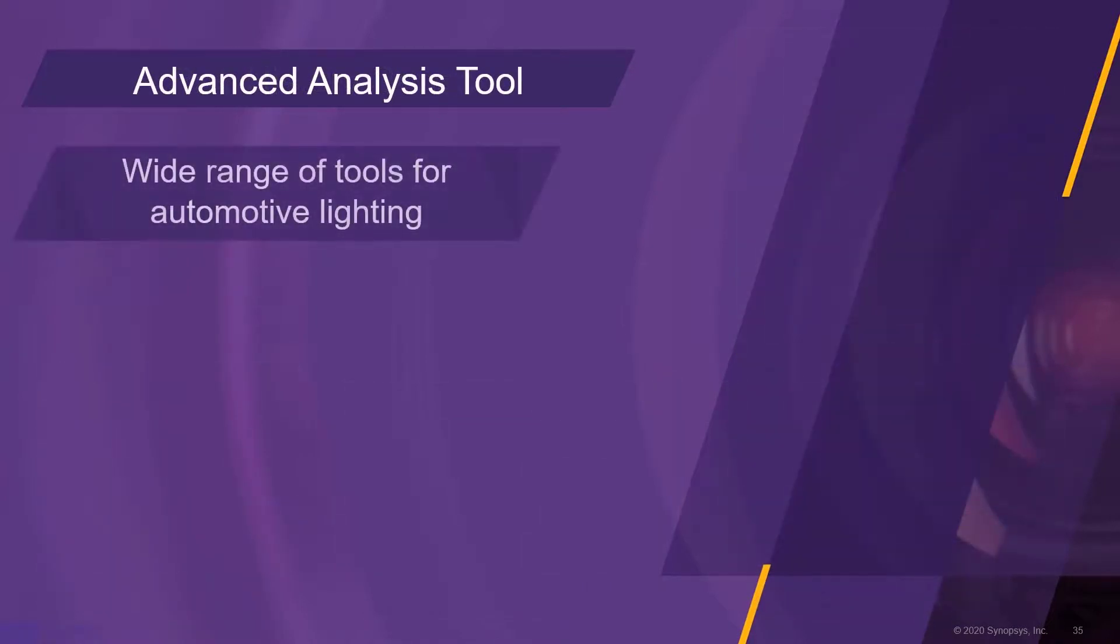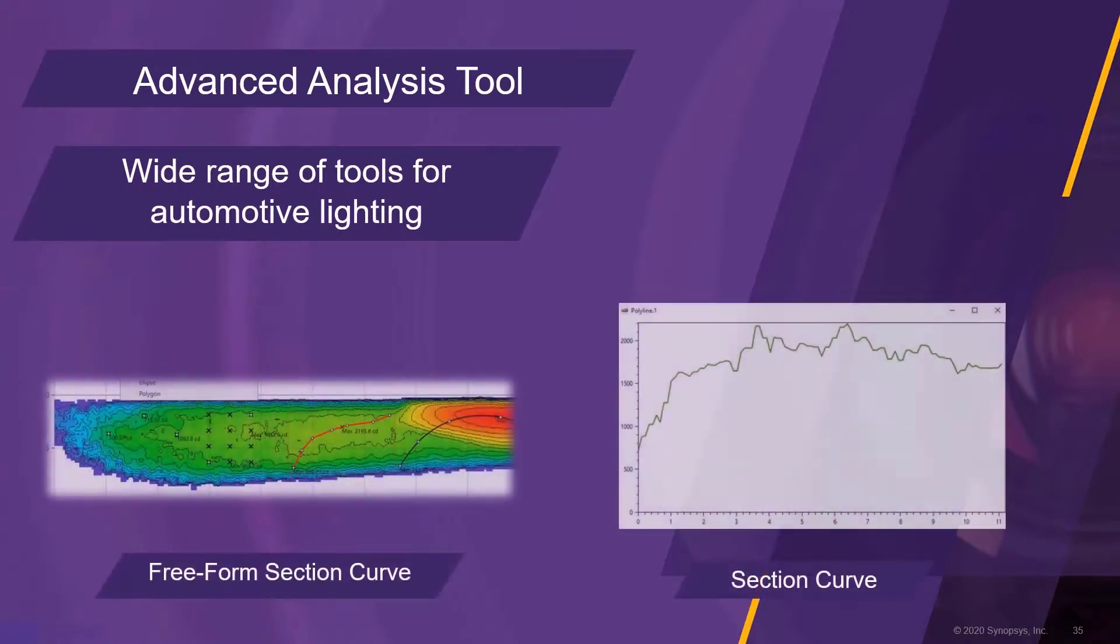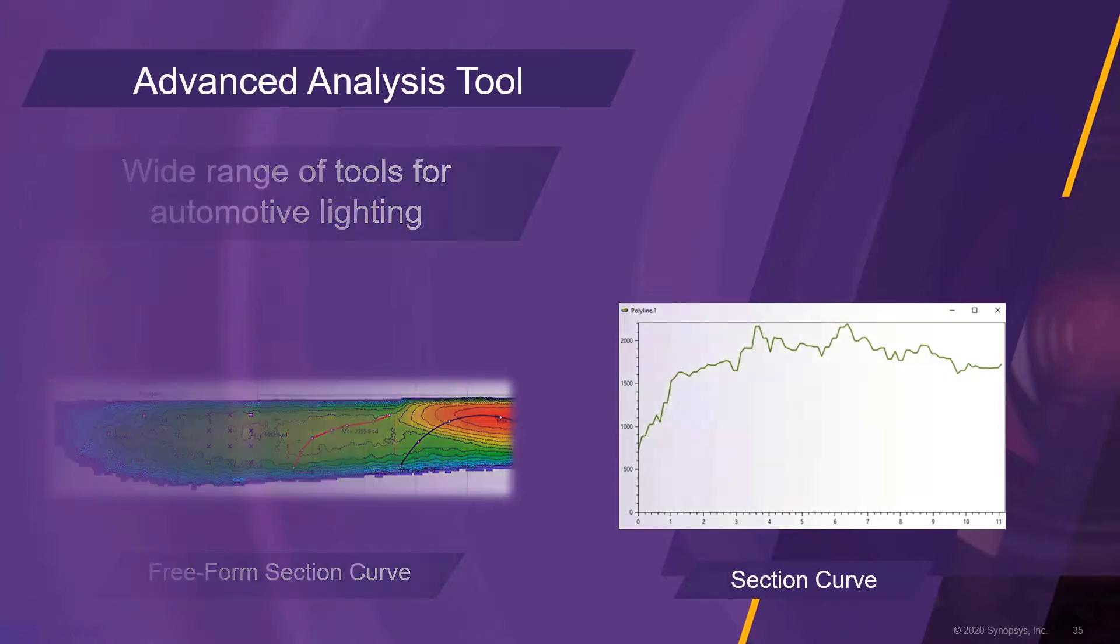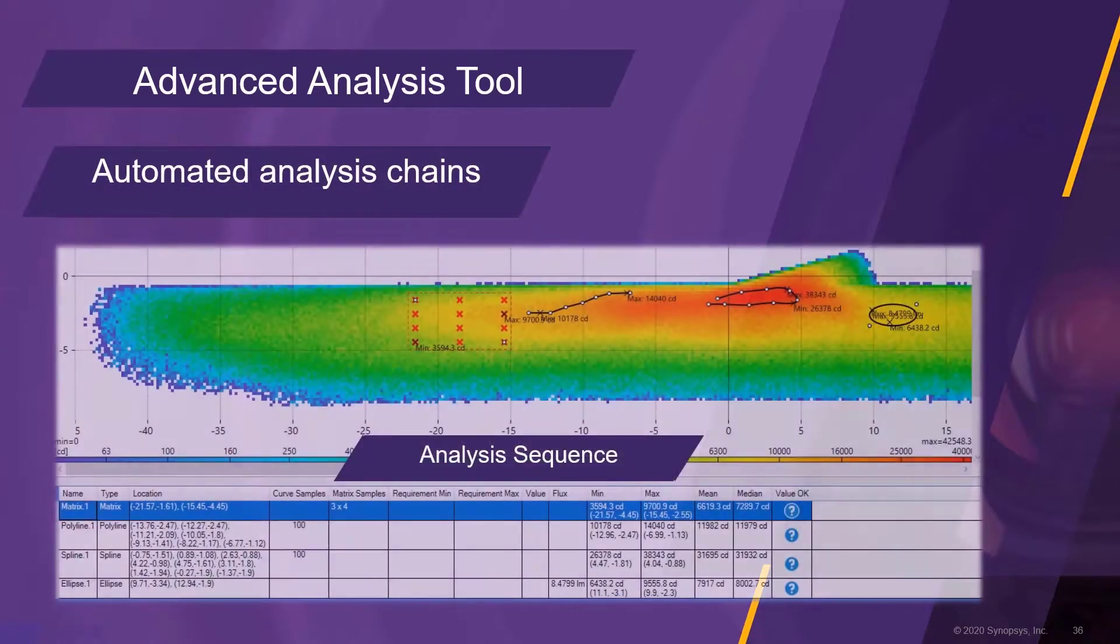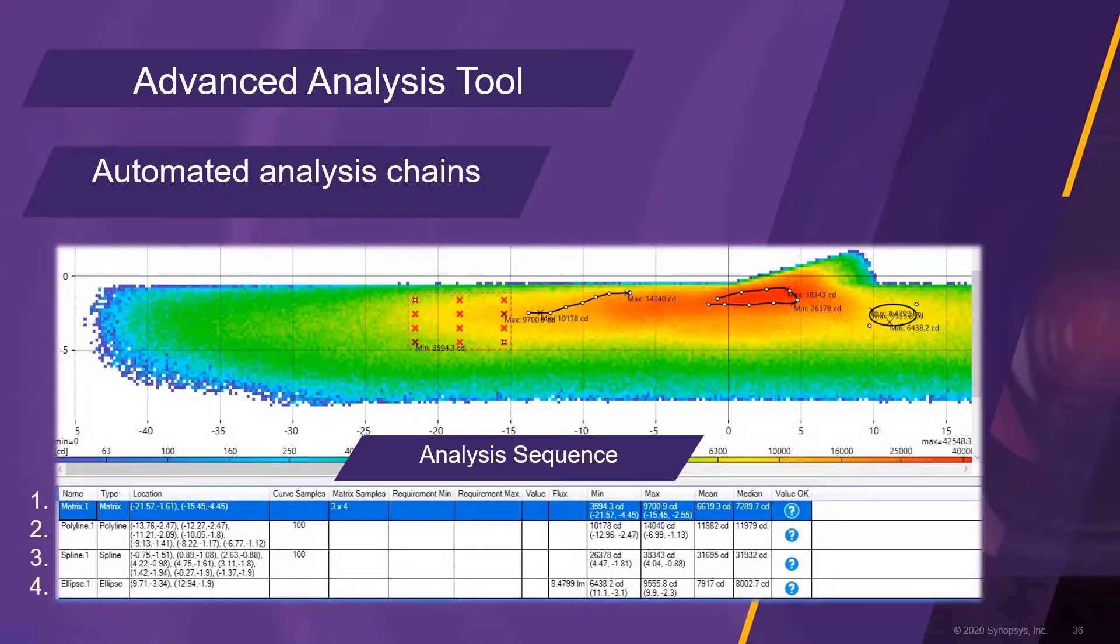The advanced analysis tool provides a wide range of tools for the analysis of automotive lighting. For example, free-form cross-sections can be created through any type of map. Another feature of the advanced analysis tool is the automated analysis chain. Here, a sequence of measurement tasks can be defined and stored as a configuration for later use. When the configuration is applied to a new light distribution, it produces a result table with immediate feedback whether the individual criteria have passed or failed.